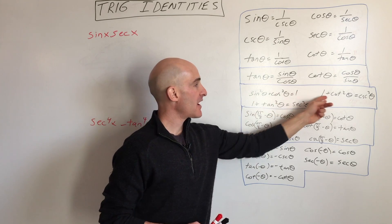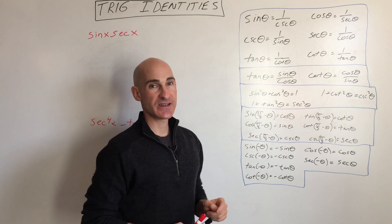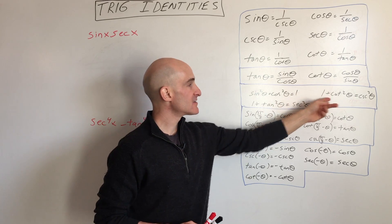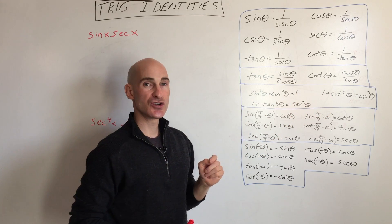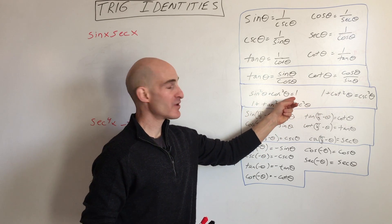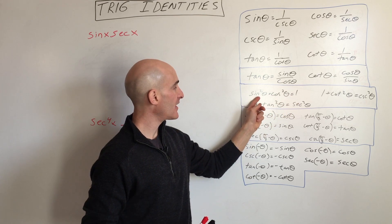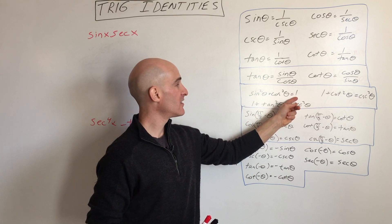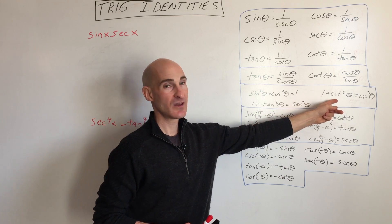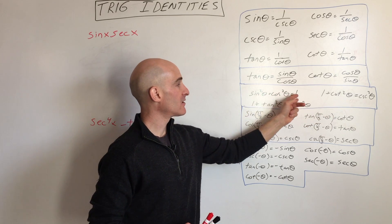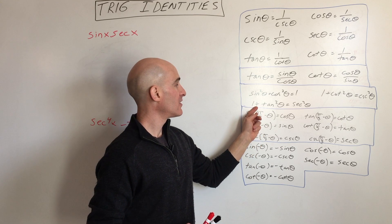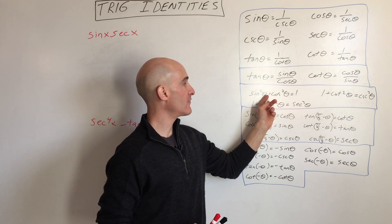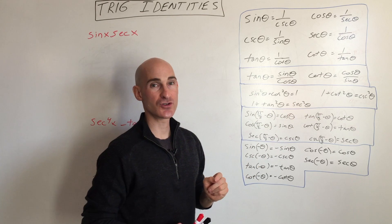We have the three Pythagorean trig identities: sine squared plus cosine squared equals one. To get the other two, take the basic Pythagorean trig identity and divide all quantities by sine squared to get the second one, or divide all quantities by cosine squared to get the third identity. So if you know the first one, you'll be able to find the other two.